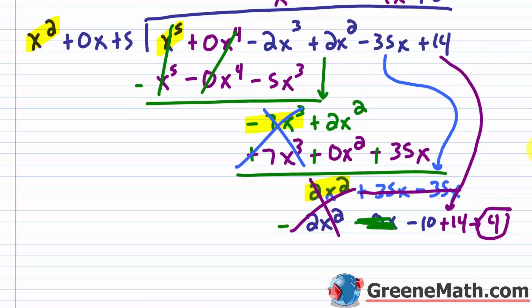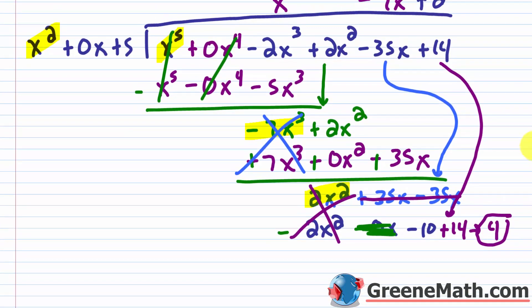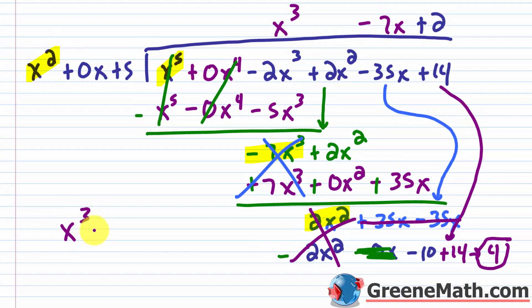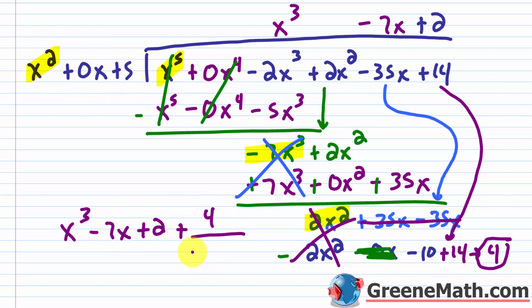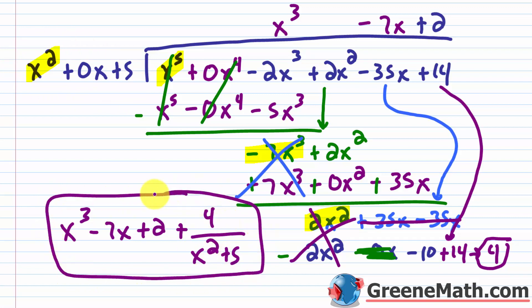So the final answer is x cubed minus 7x plus 2, plus the remainder 4 over x squared plus 5. And you can always check this with multiplication — take the quotient and multiply it by the divisor and you will get the original dividend.